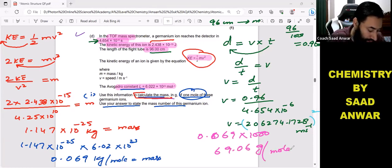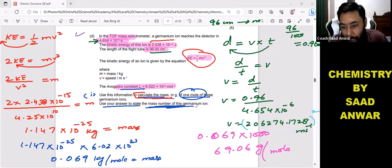So this is the answer. And the mass number—in the second part they are saying use your answer to state the mass number of germanium ion—would be 69. This is the mass number. So this is how I solved the question.